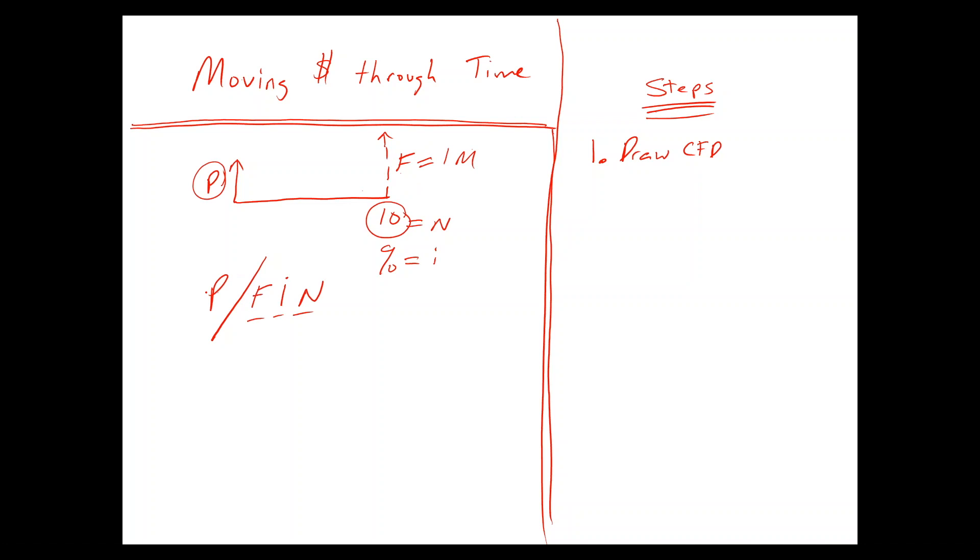So over to the right side of the screen, it says the steps. So the first step, whatever you do whenever you see a problem, is draw out the cash flow diagram. That's what CFD means, cash flow diagram.